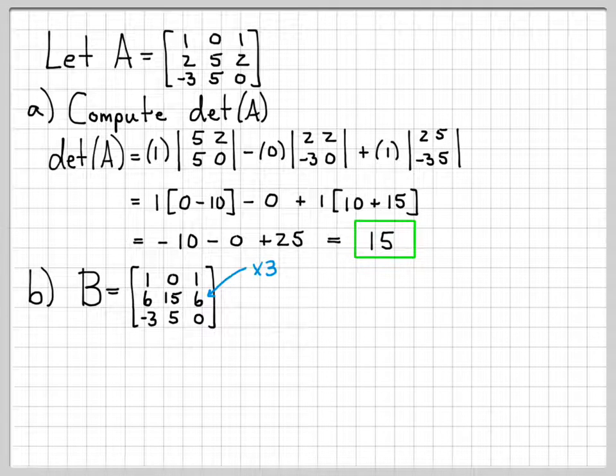And in fact, we can see that the second row in matrix B has essentially been multiplied by 3, right? The 2 became a 6. The 5 in matrix A became a 15. And the other 2 became a 6 as well.